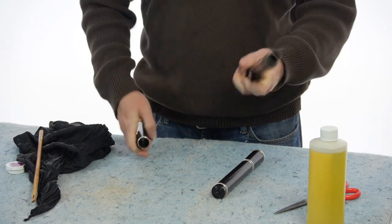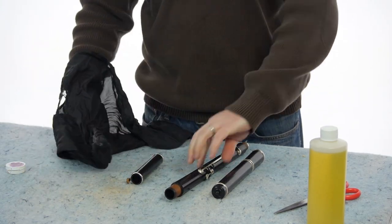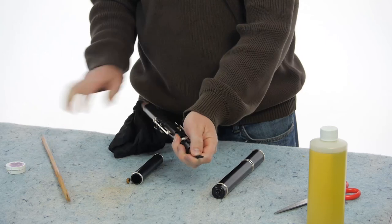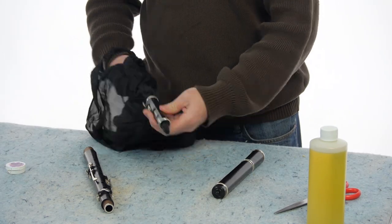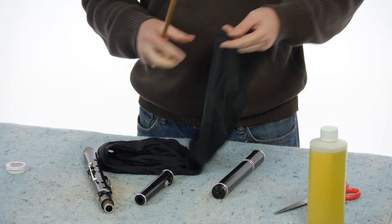After playing, swab the bore to get rid of any excess moisture. I use a silk flute swab guided through with a wooden cleaning rod. It's okay if the bore is slightly damp. We just want to get rid of the larger drops of condensation.